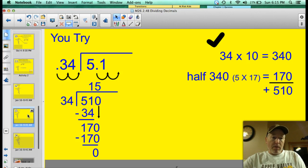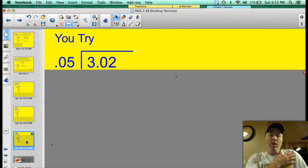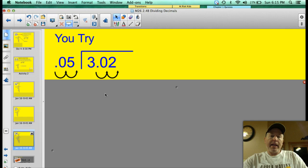Alright. Let's keep moving. Try another problem. Your last one before your ticket to the show. 3.02 divided by .05. Give it a shot. Did you move the decimal? Let's just see. If not, try it again.